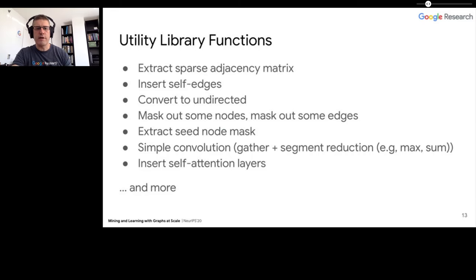Our utility library will allow you to do things like extract a sparse tensor corresponding to the adjacency matrix out of the encoding that we provide. You'll have functions to insert self edges, which is very common, convert directed graphs to undirected if desired, or mask out nodes which involves masking out their corresponding edges, or just mask out some edges. You can do things like edge dropout and more. It'll also have building blocks to build simple convolutions, so you could do it by hand if you were just using this.